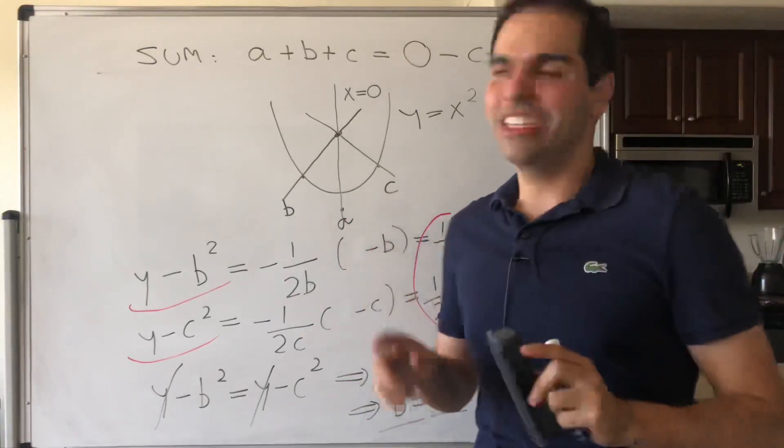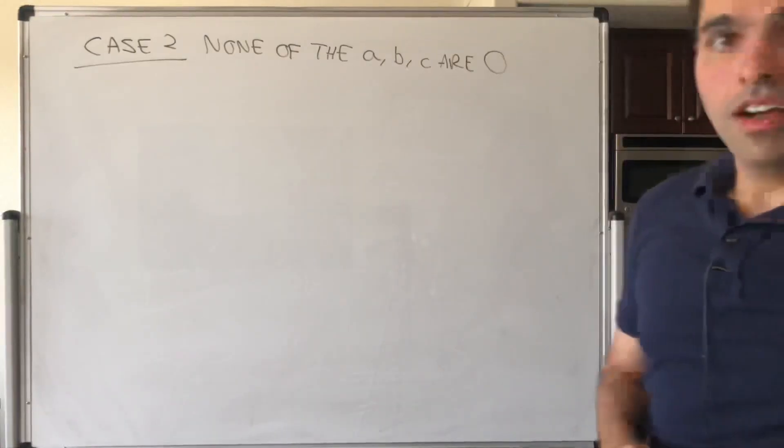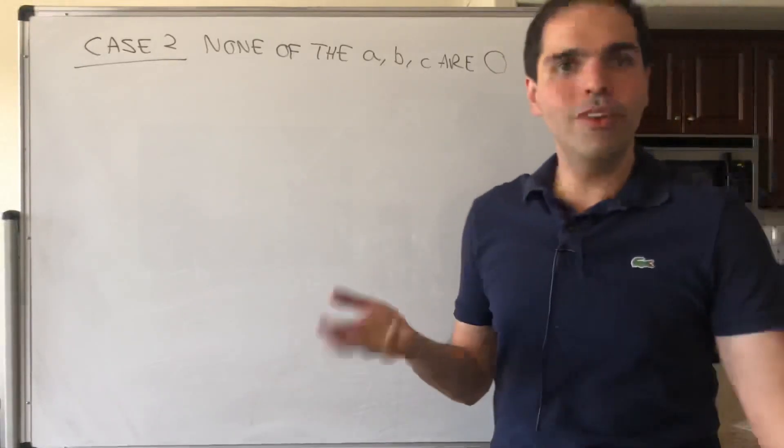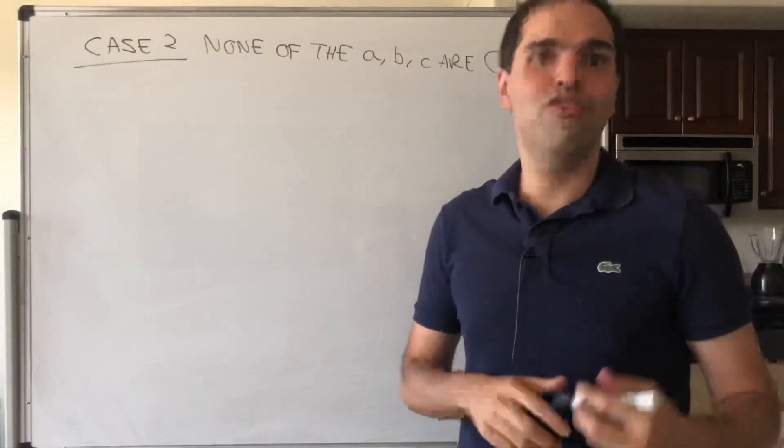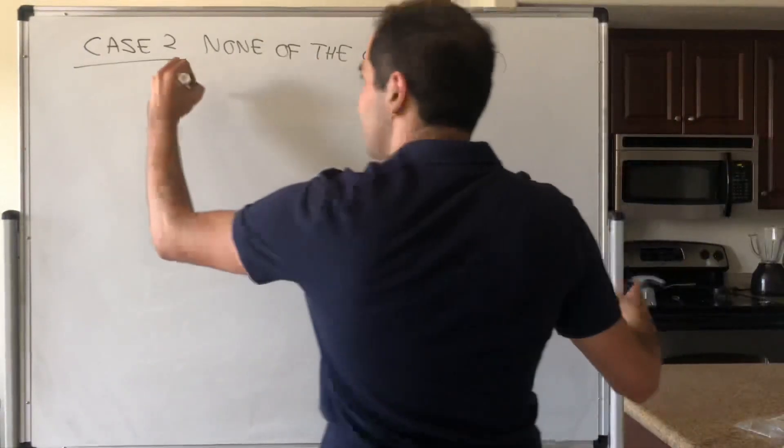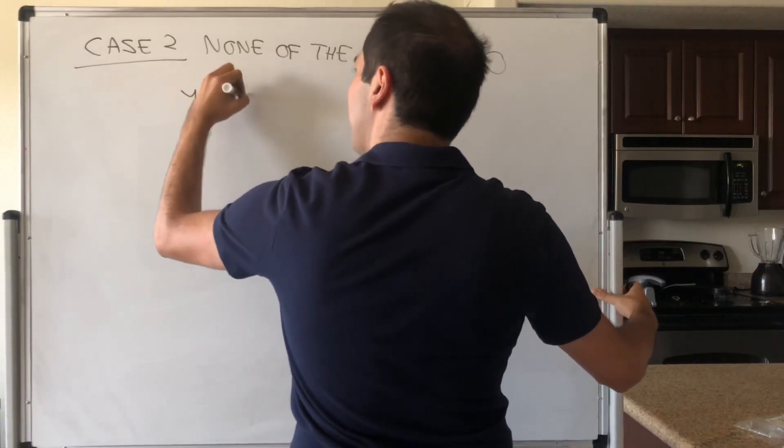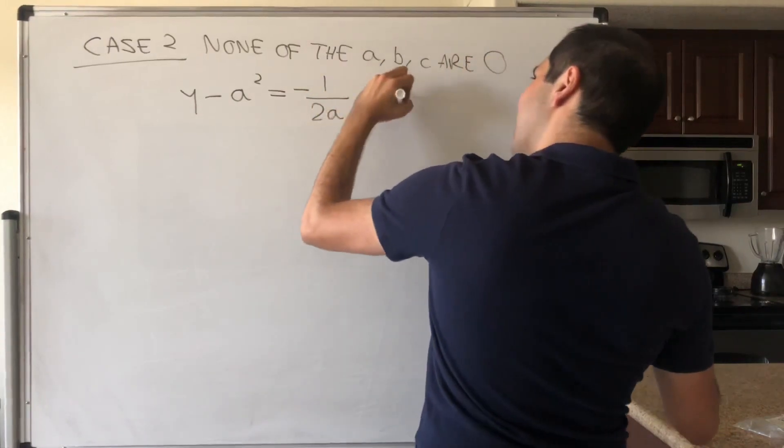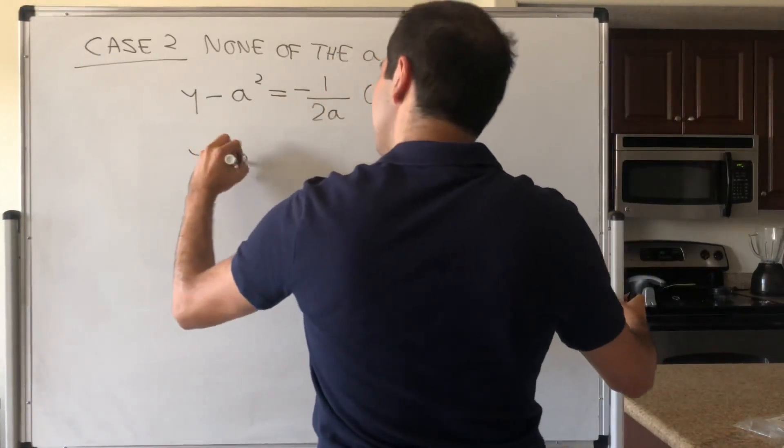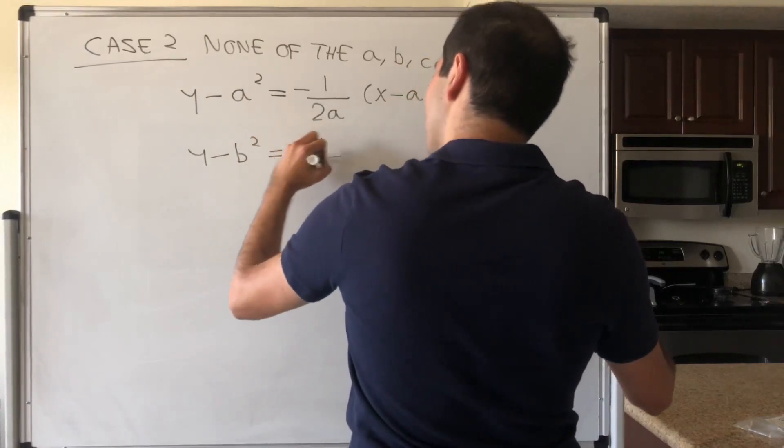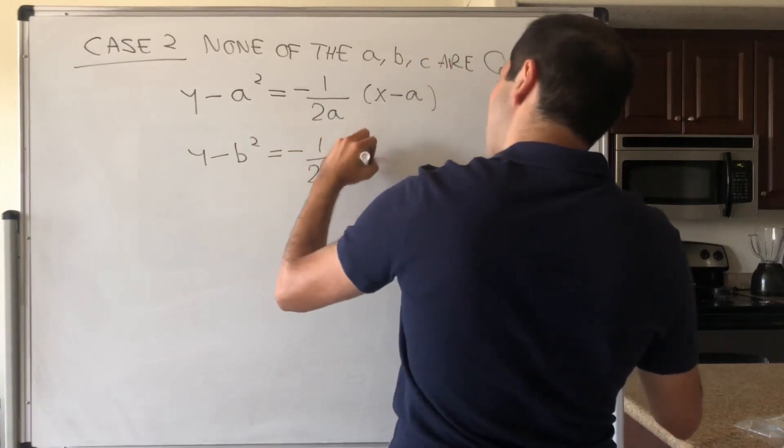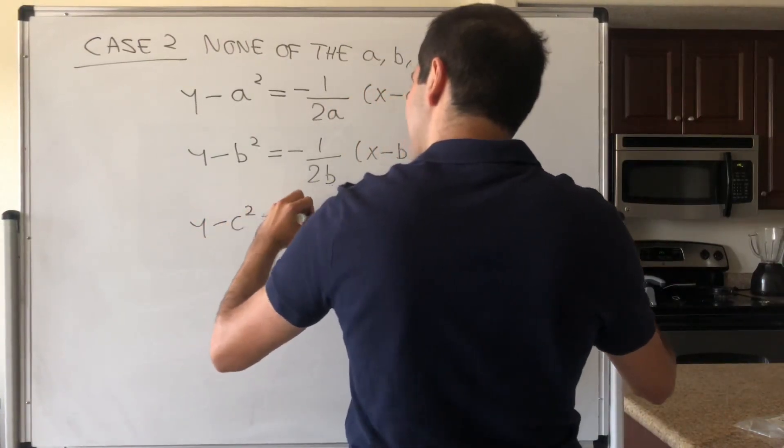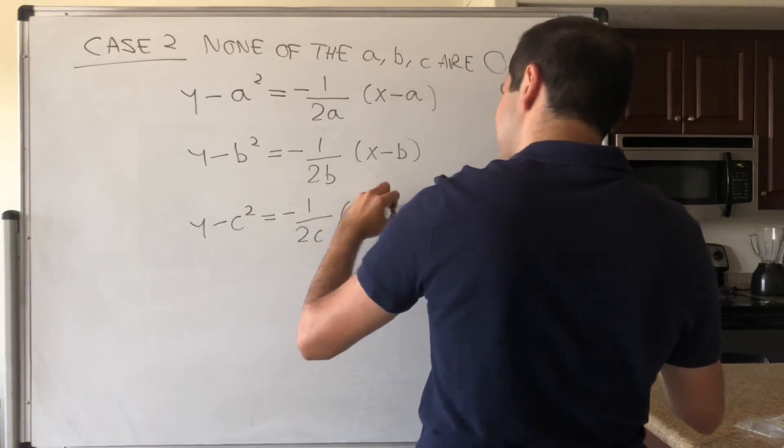And now let's look at the more interesting case. All right, now suppose that none of the a, b, c are zero, then what we really have to do, we have to look at the full equations of the three normal lines, which I like to remind you is y minus a squared equals minus 1 over 2a, x minus a, y minus b squared equals minus 1 over 2b, x minus b, and y minus c squared equals minus 1 over 2c, x minus c.